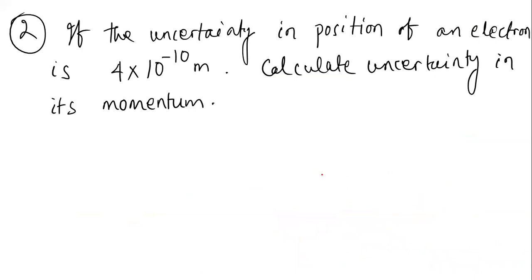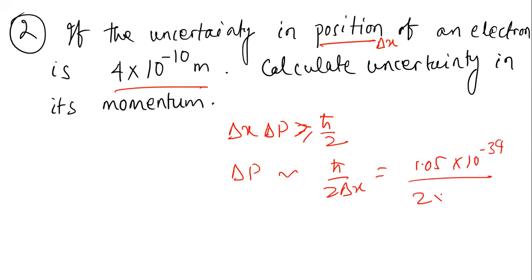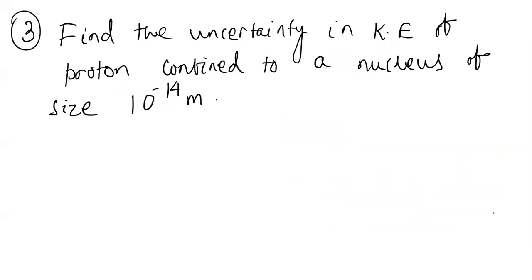The second question: if the uncertainty in position Δx of an electron is given, calculate the uncertainty in momentum. Here no velocity value is given, so we simply substitute into Δx·Δp ≥ ℏ/2. Thus Δp = ℏ/(2·Δx) = 1.05 × 10⁻³⁴ divided by 2 × 10⁻¹⁰, giving Δp ≈ 5.31 × 10⁻²⁵ kg·m/s. This is a direct substitution question.